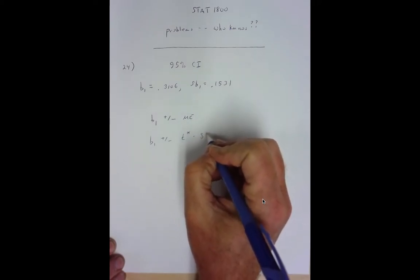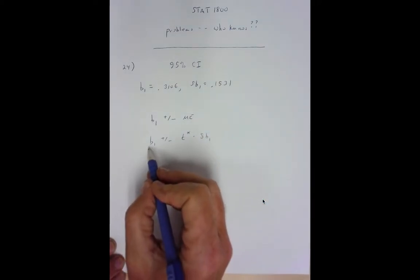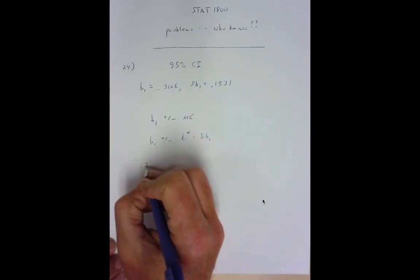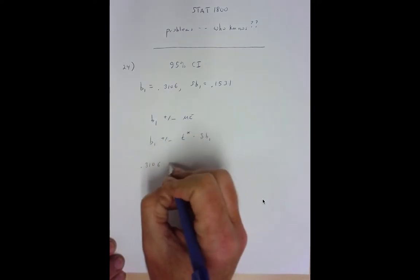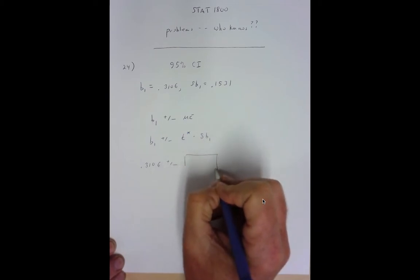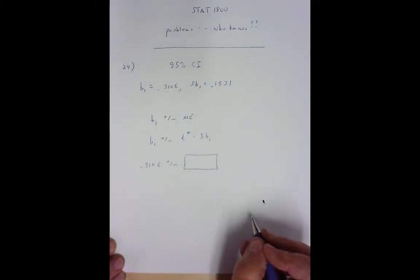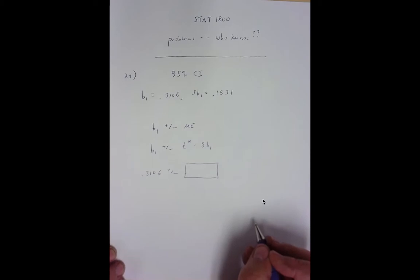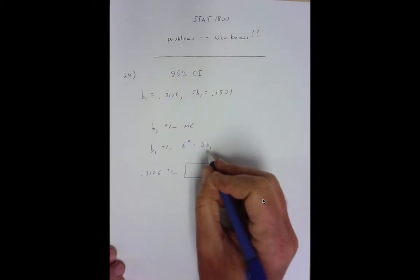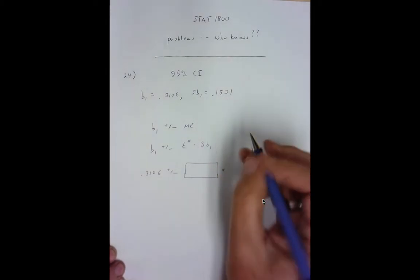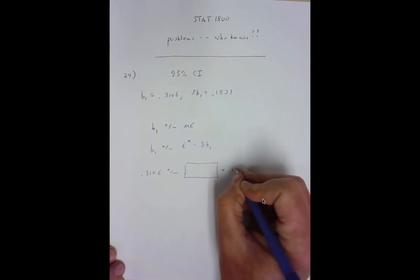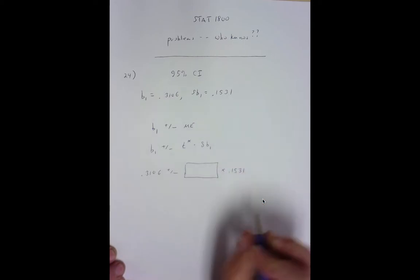So we know beta 1 is 0.3106. We don't know this value, so I'm going to put it in a box to be determined in just a few minutes, times s beta 1, standard error for beta 1, which is 0.1531.